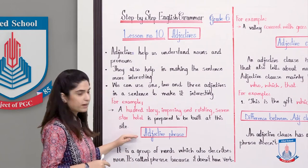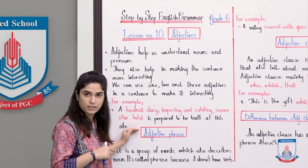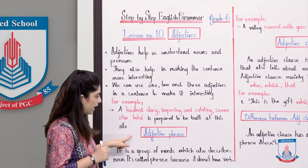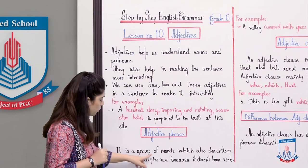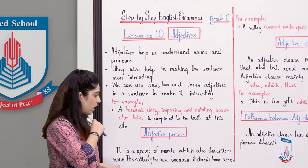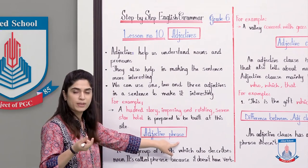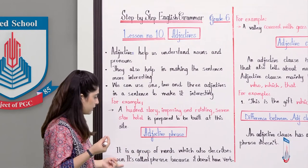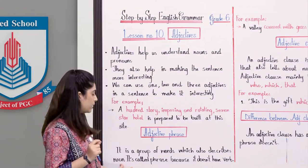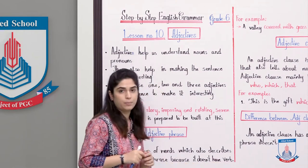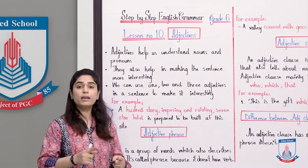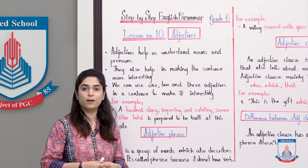For today's topic, we will first talk about adjective phrases and clauses, then I will tell you the difference. First, let's see the definition of an adjective phrase: it is a group of words which also describes nouns. A phrase is basically a group of words that tells you more about nouns and pronouns. It is called a phrase because it does not have a verb — there is no verb in it. If it contains a verb, then it will be a clause. That's the only difference.